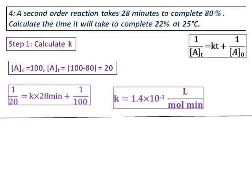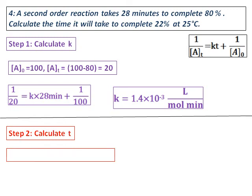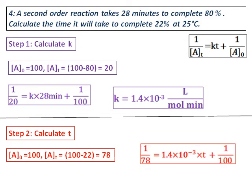Note that this is a second-order rate law, so now we have the value of k. For step 2, we calculate the time for 22% completion. The initial concentration is 100, and since the reaction is 22% complete, the concentration at time t is 100 minus 22, which equals 78. Substituting all these values along with the previously calculated k, the time comes out as 2 minutes.